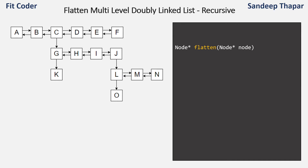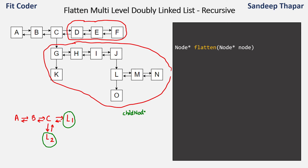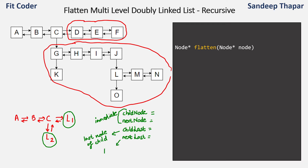Let's look at the recursive method to flatten the multi-level doubly linked list. At node C there is a next level, so we can break the linked list into two parts: C is pointing to a linked list L1, and the child of C is another linked list L2. To flatten this we need to flatten both L2 and L1. We keep track of four pointers: child node, next node, child last, and next last. Child node and next node are the immediate nodes; child last is the last node of the child list; and next last is the last node of the next list.